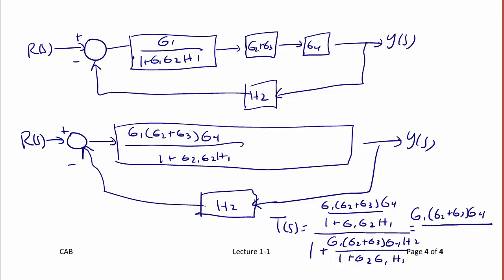And the denominator is 1 plus g1, g2, h1 plus g1 times the quantity g2 plus g3 times g4 times h2. And this concludes lecture 1-1, our introduction to linear control systems.